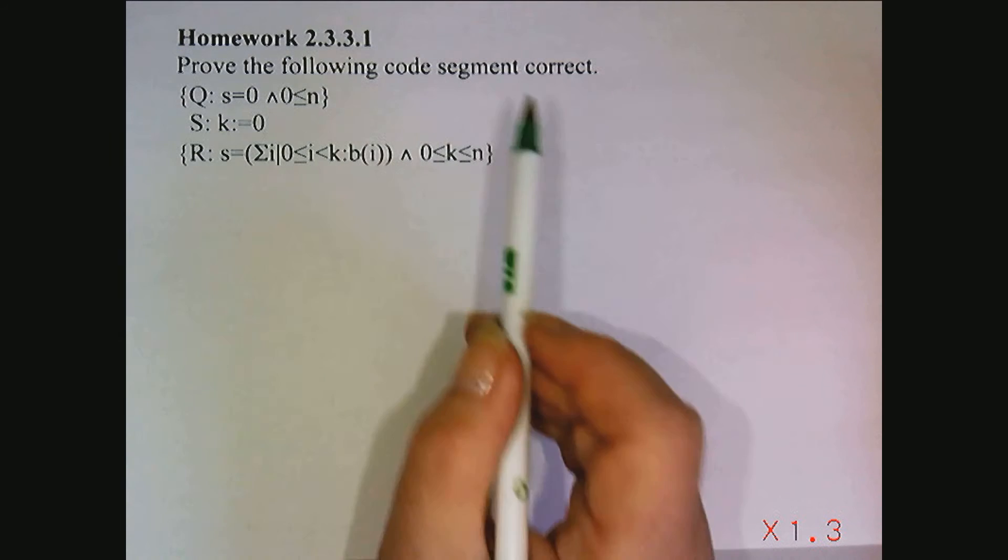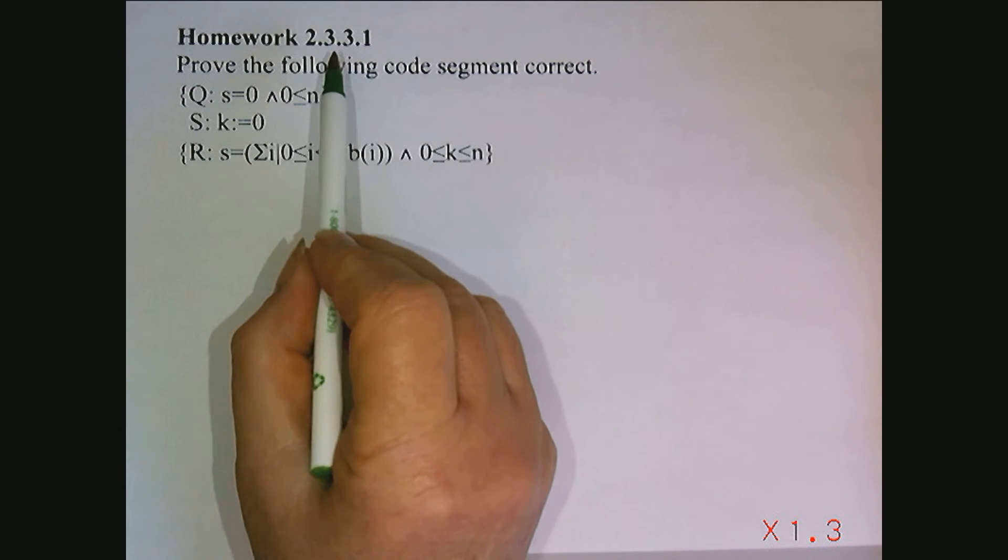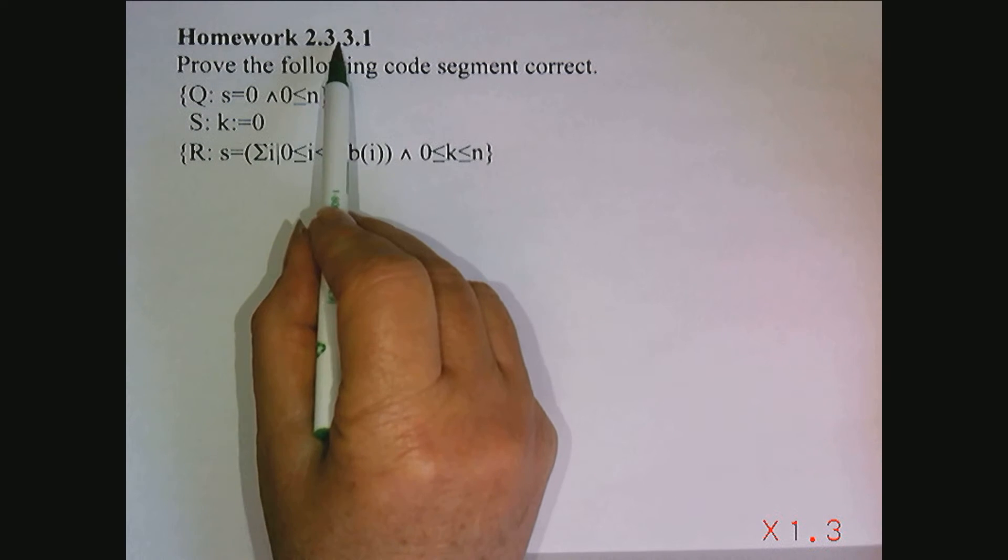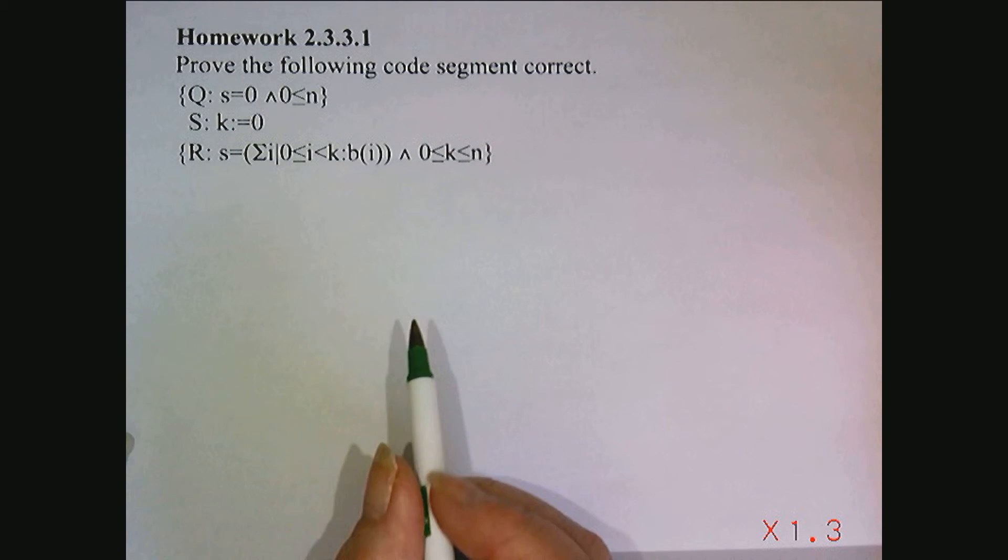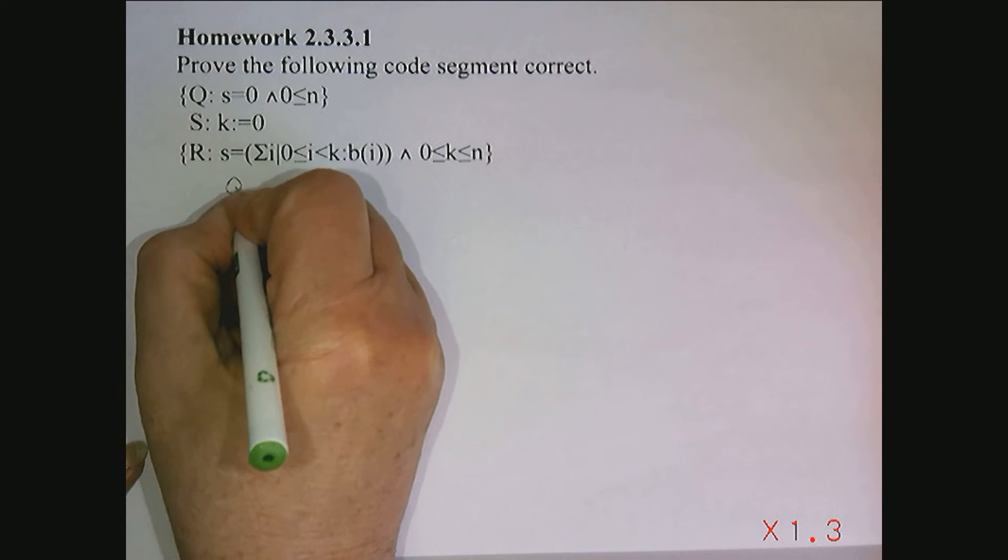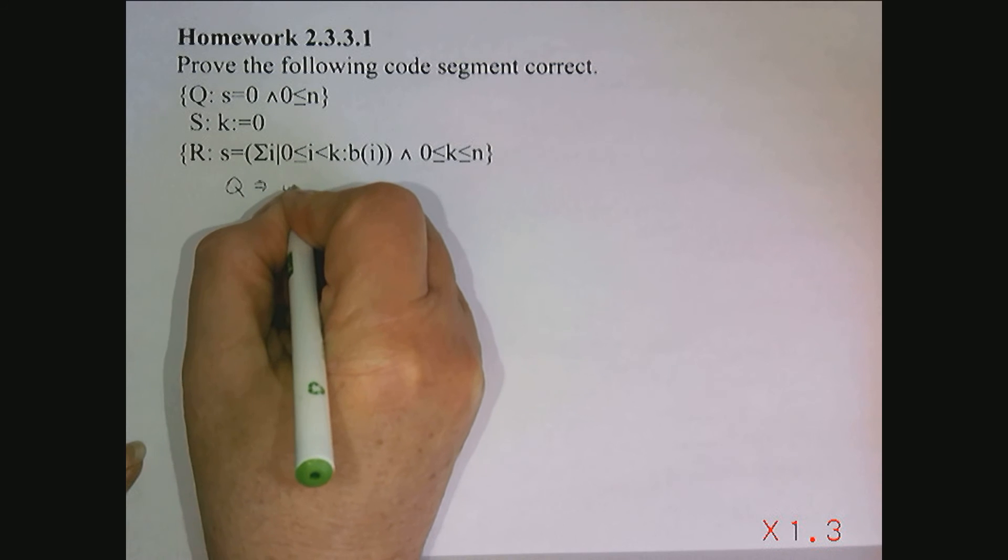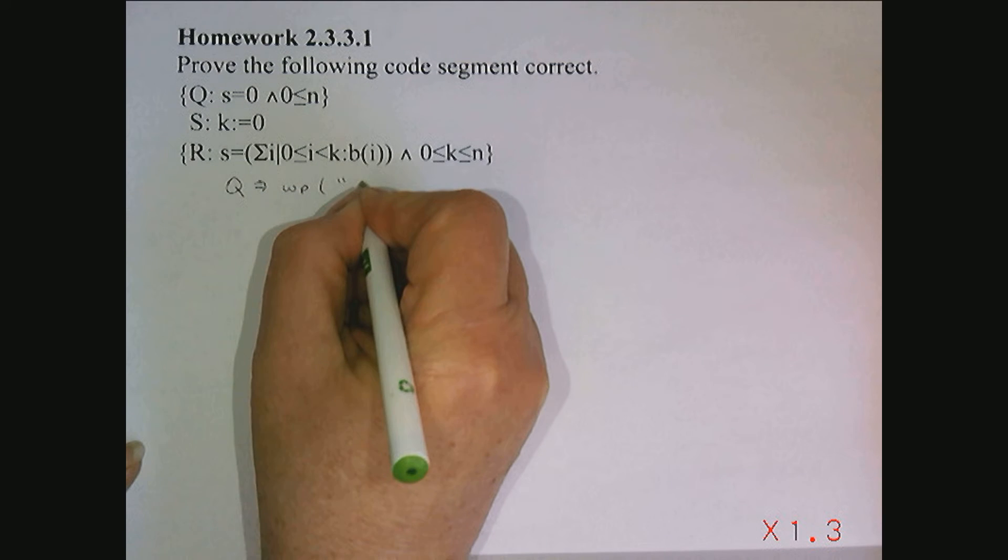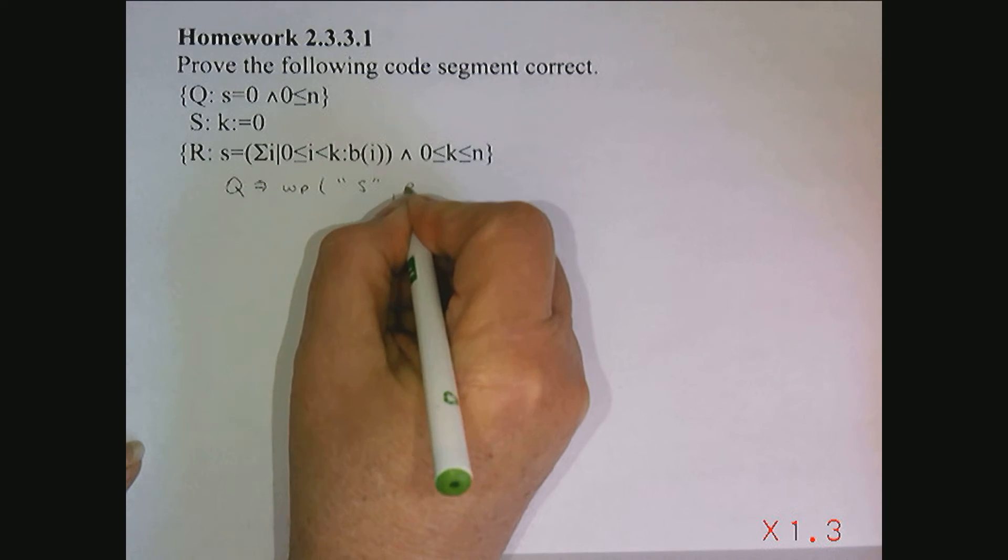Let's prove the code segment in homework 2.3.3.1 correct. So what do we need to do? We need to show that Q implies the weakest precondition of the command R.